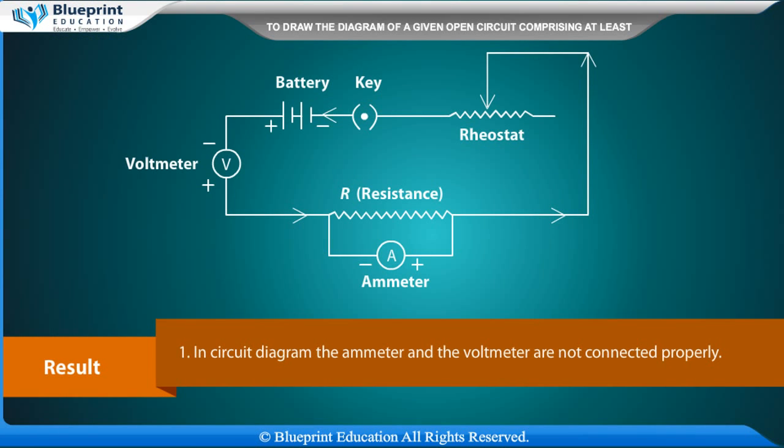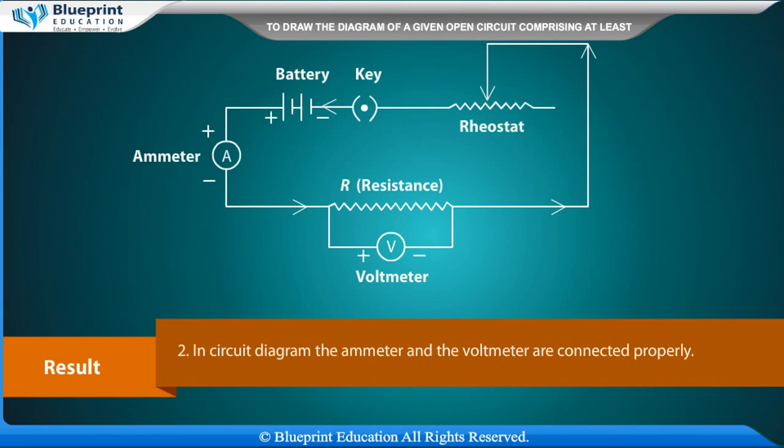Results: In circuit diagram 1, the ammeter and the voltmeter are not connected properly. In circuit diagram 2, the ammeter and the voltmeter are connected properly.